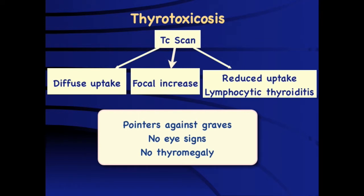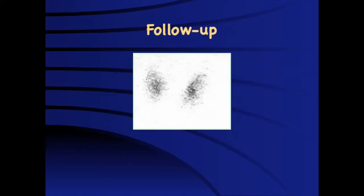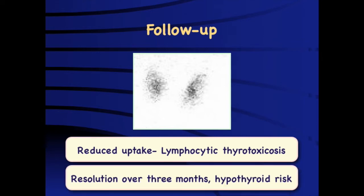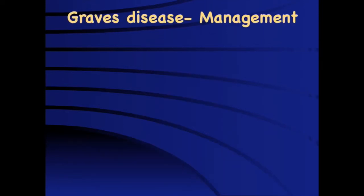Pointers against Graves disease include absence of eye signs, absence of thyromegaly, and male gender. In this case, the thyroid scan showed reduced uptake, confirming the diagnosis of lymphocytic thyroiditis. This condition usually resolves over three months; however, there is a 30–40% risk of development of hypothyroidism later in life.